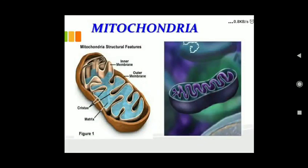Good morning everyone, today we are going to study about mitochondria. Here a diagram of mitochondria is given. Mitochondria have two membranes: outer membrane and inner membrane. The outer membrane is porous in nature — porous means having holes — and these holes are basically used to take material in and out of the cell.